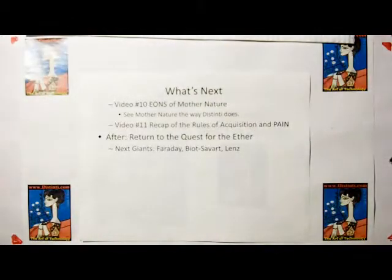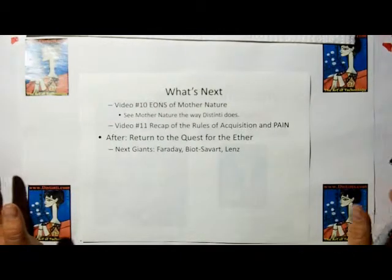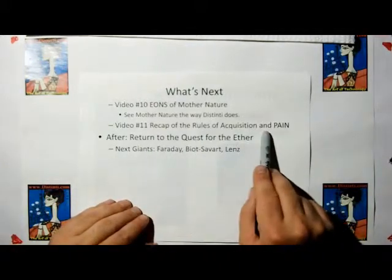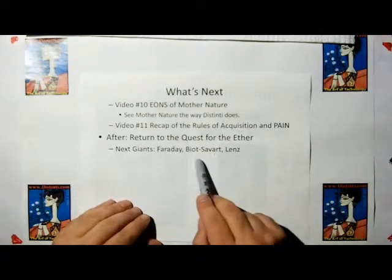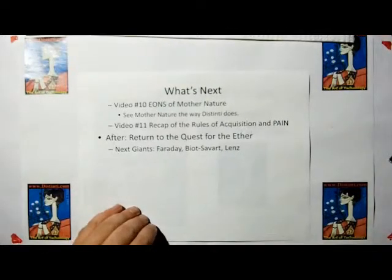So what's next? Video number 10, we're going to talk about the ends of Mother Nature. We're going to take what I just showed you about the epochs of Mother Nature, and we're going to apply it and come up with a very interesting conjecture about where we fit in the universe. After we're done, we're going to do a recap of the rules of acquisition and pain up to this point, and then we're going to continue on our quest for the ether. Thank you very much.